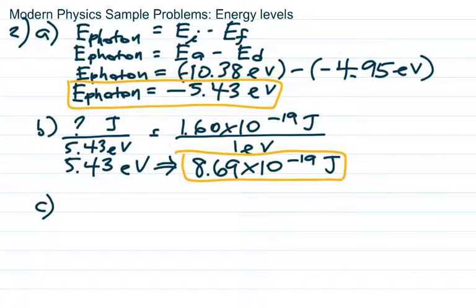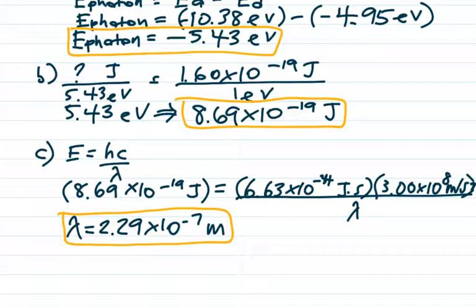For the wavelength, we use E equals hc over lambda. Solving for lambda gives 2.29 times 10 to the negative 7 meters. A note on Planck's constant: 6.63 times 10 to the negative 34 is a ridiculously small number. Planck distances and Planck times are considered the smallest things in nature — smaller than the strings in string theory. Also, Planck's constant has units of joule-seconds, not joules per second — the units are on the reference table, so be careful.